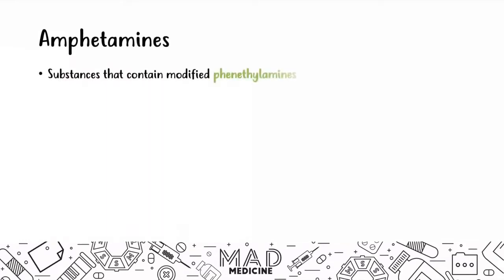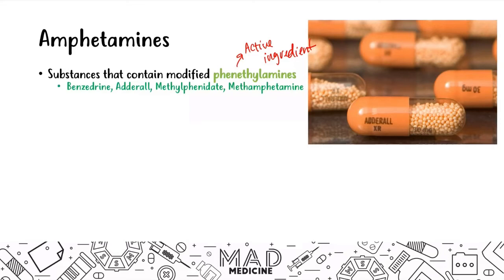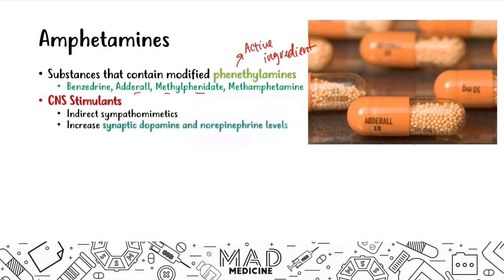Amphetamines are substances that contain phenylethylamines, which are the main active ingredient. The main drugs classified as amphetamines are Benzedrine, Adderall, methylphenidate, and methamphetamine. Adderall and methylphenidate are often used for ADHD. These are all stimulants with indirect sympathomimetic function — they directly increase synaptic dopamine and norepinephrine levels. That's the main effect they have.